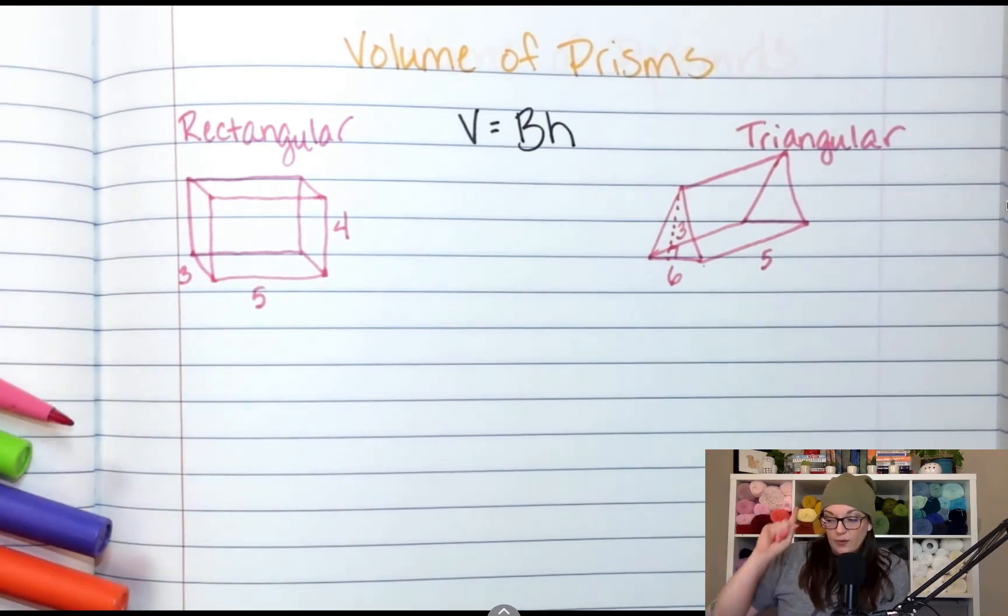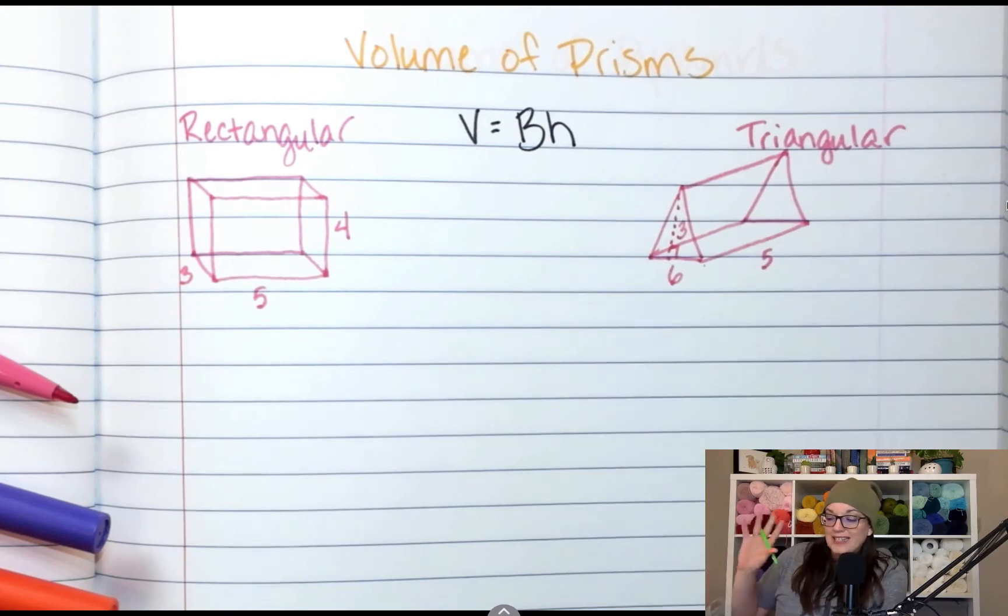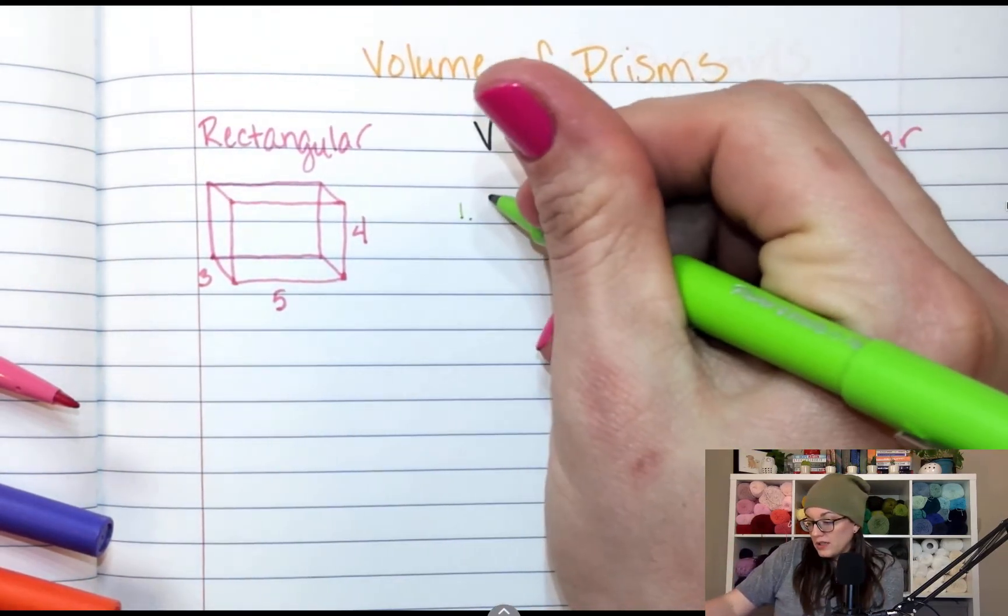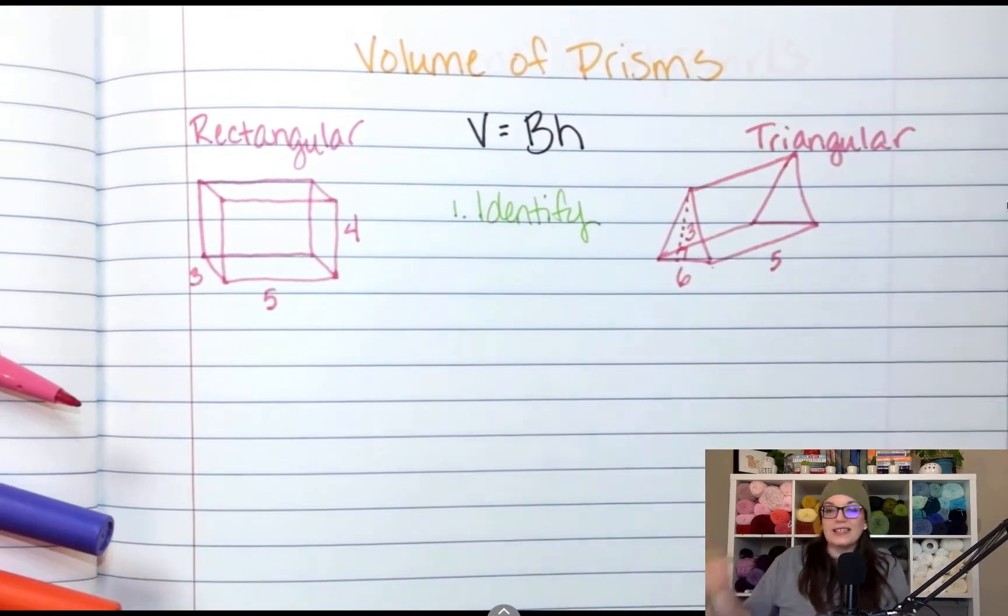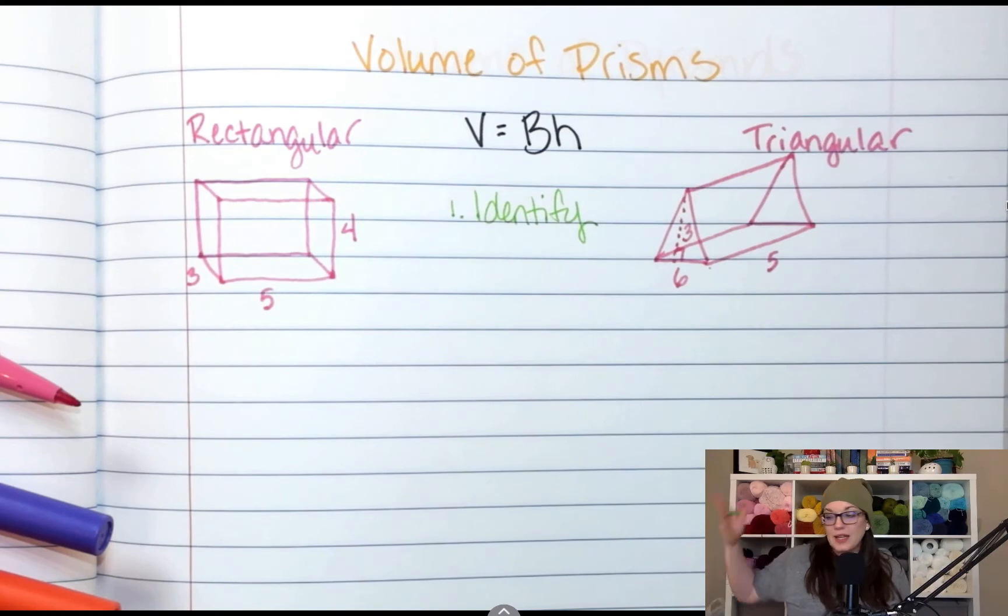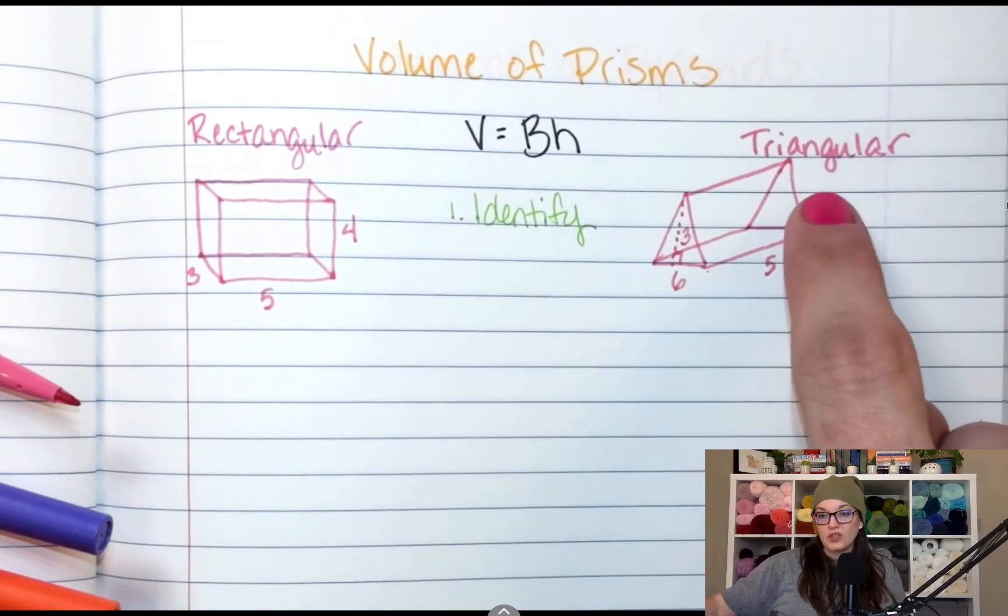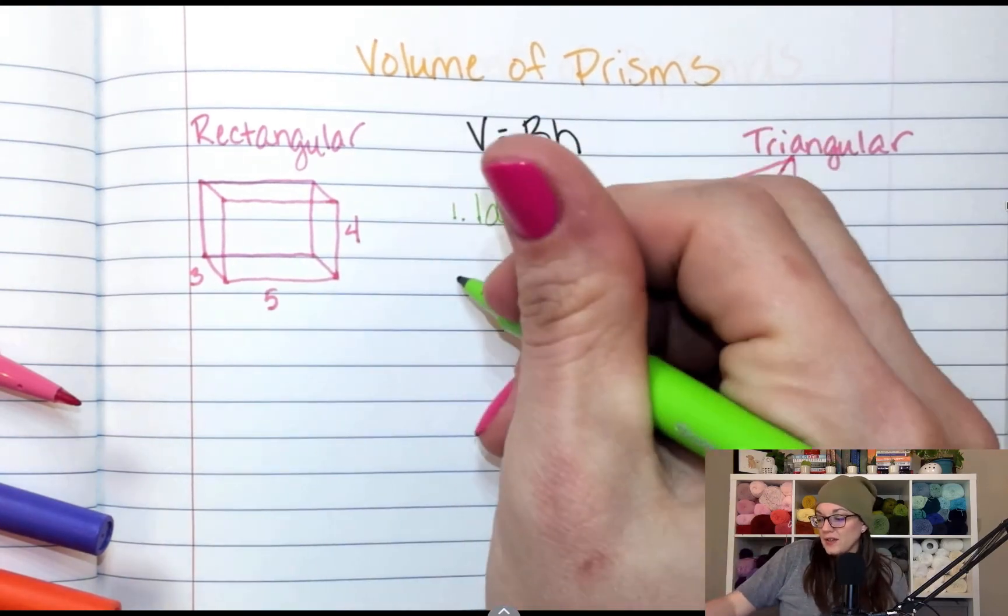All right, the first thing we're going to do step by step. Step one, identify the shape. Say its name, first name, last name. This is a rectangular prism. This is a triangular prism.